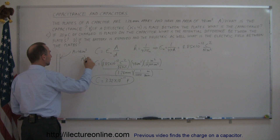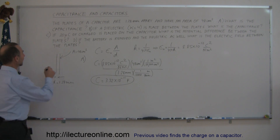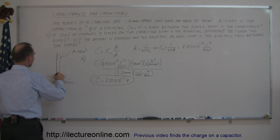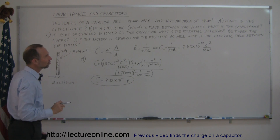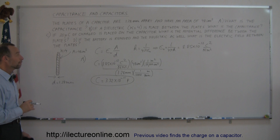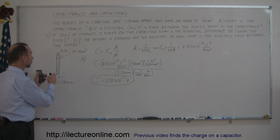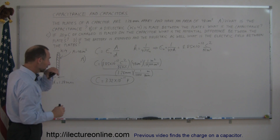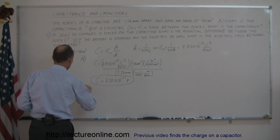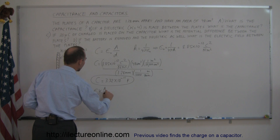Now for Part B: we place a dielectric between the plates with dielectric constant K equals 4. How does that change things? When you add a dielectric to a capacitor, it increases the capacitance because it weakens the electric field between the plates. The new capacitance equals epsilon-sub-naught times K times A over D.